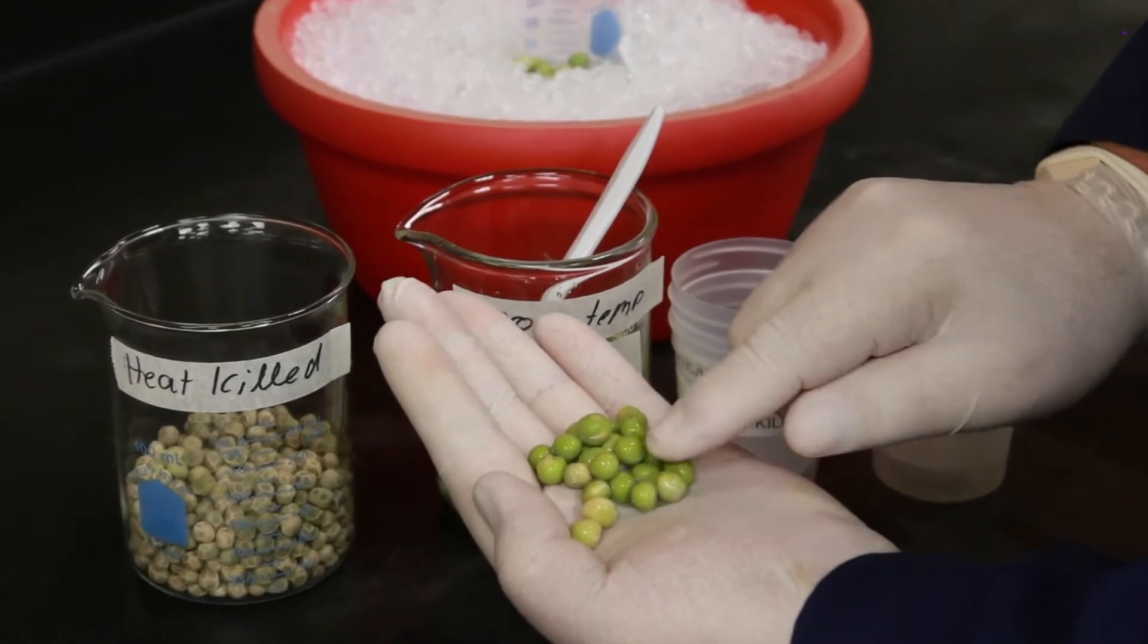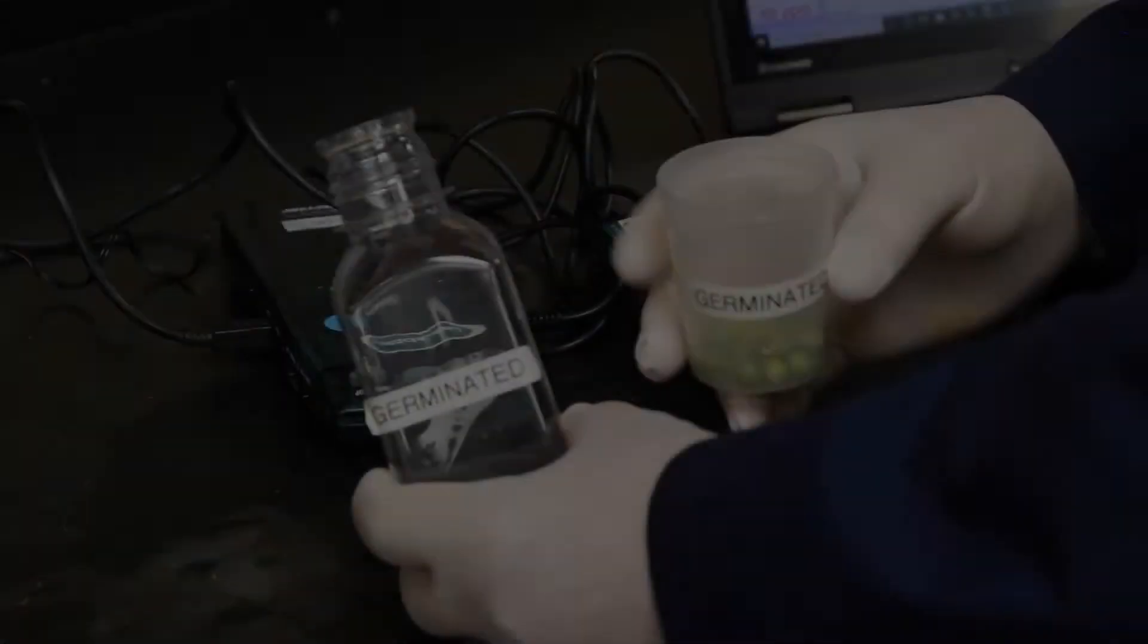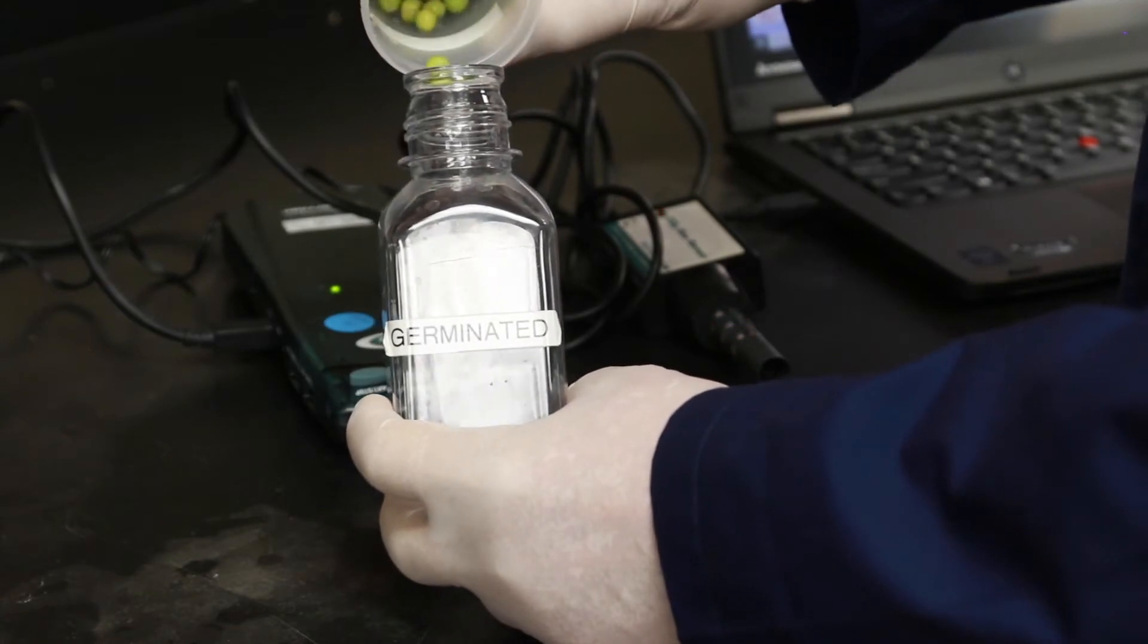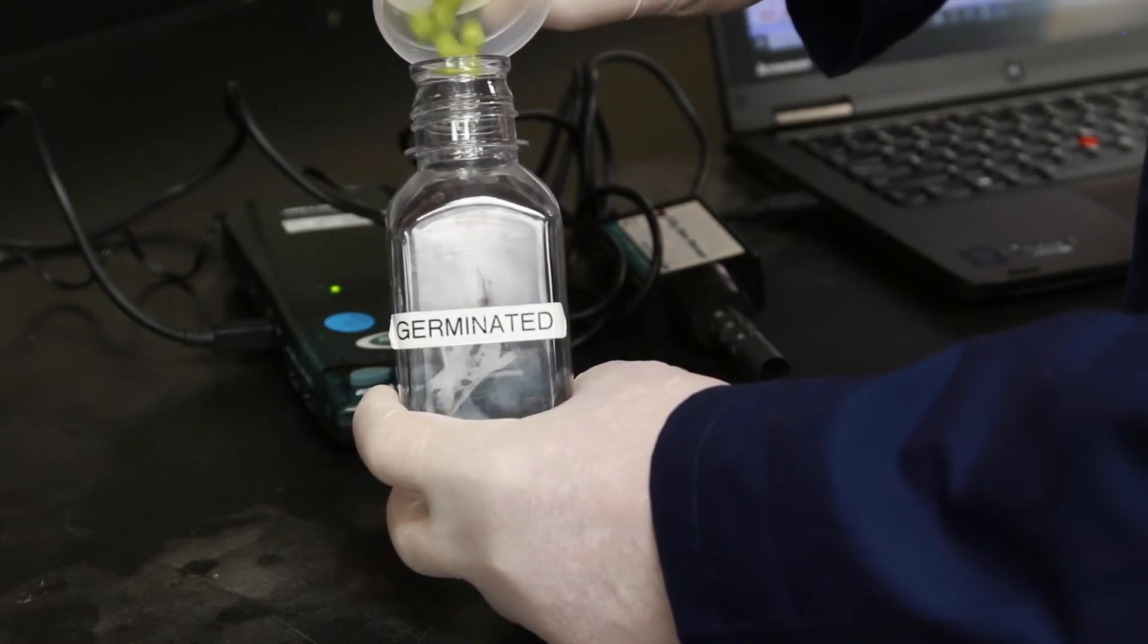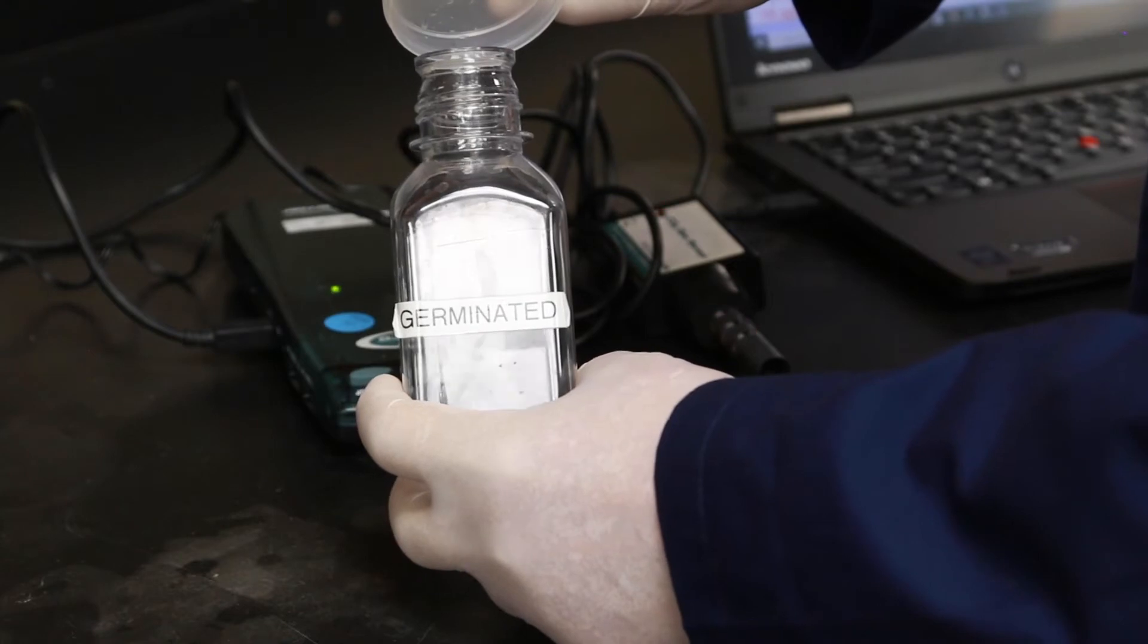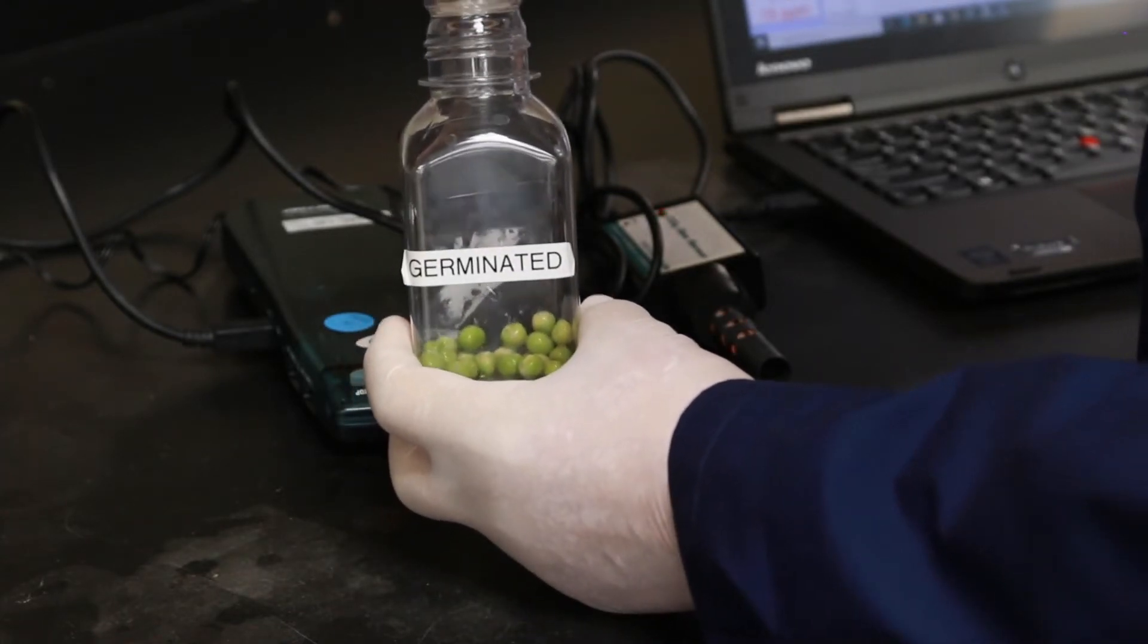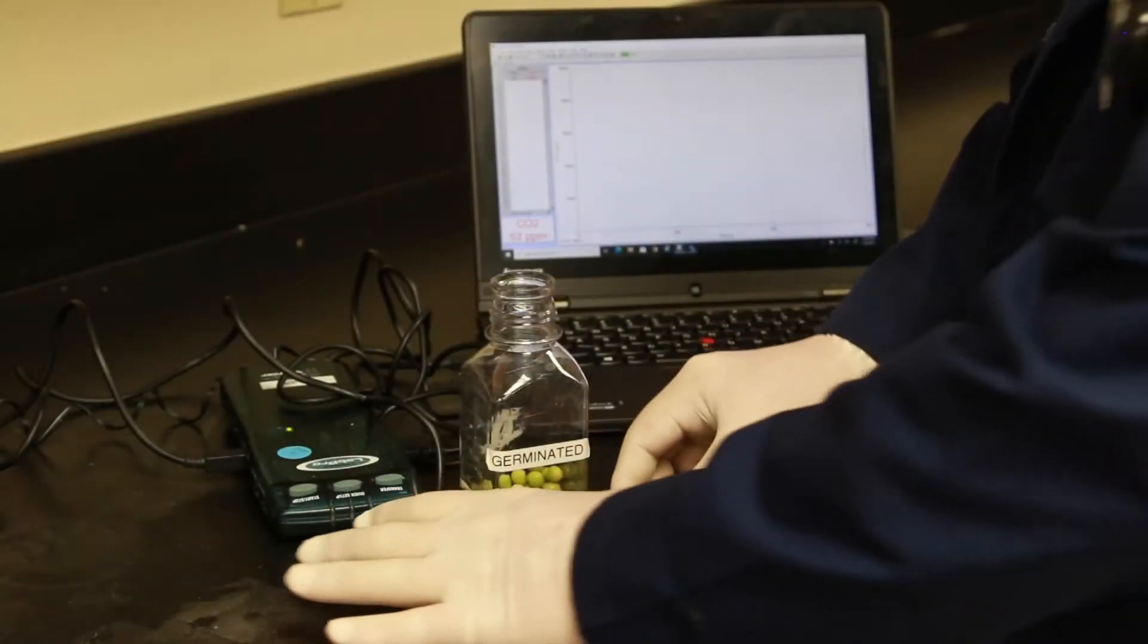The 25 peas are going to be counted out and they will then be placed in a large plastic flask. This flask is going to be used to measure the CO2 production from the cellular respiration that's occurring within the peas. Although peas are plants they do still carry out cellular respiration.